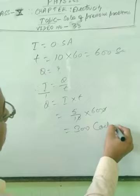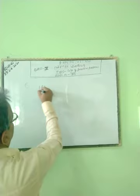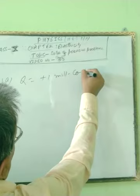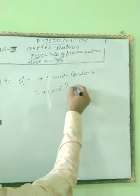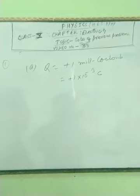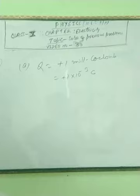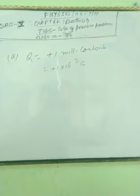The second question: how many electrons can be removed from a body so that it may have a charge Q equal to plus 1 millicoulomb, means plus 1 into 10 to the power minus 3 coulombs. Plus indicates that some amount of electrons has been removed from that object. Now find N equal to what.